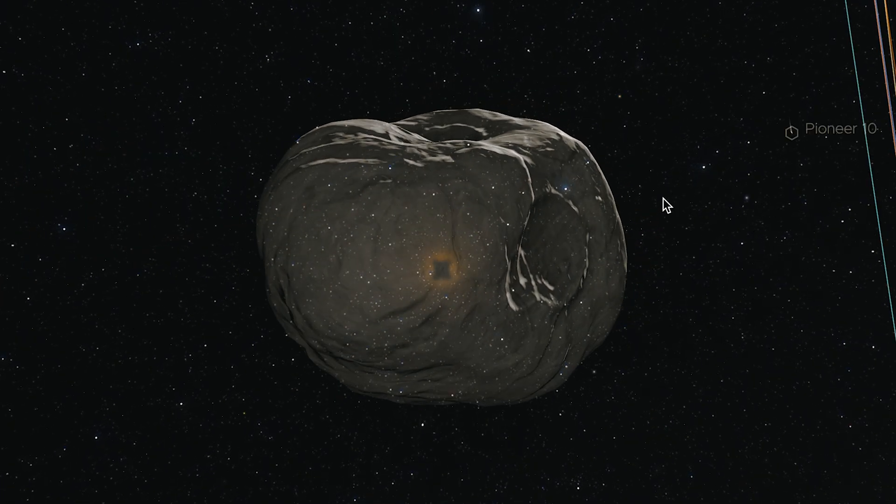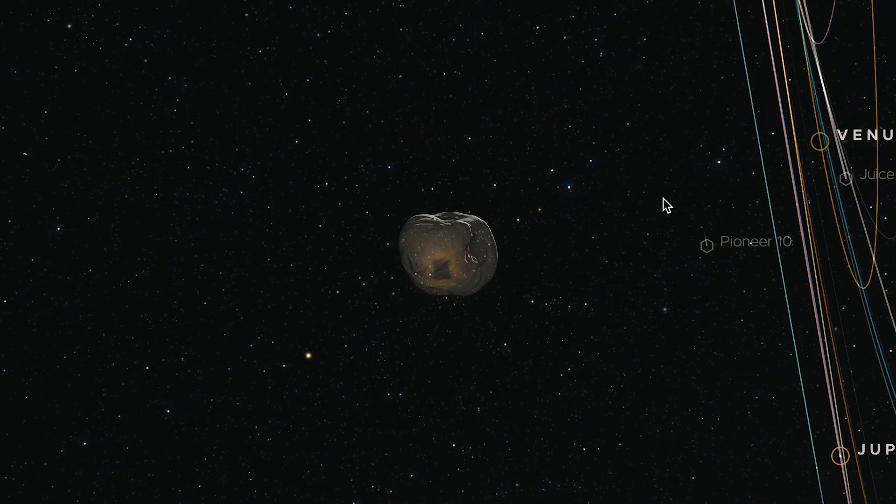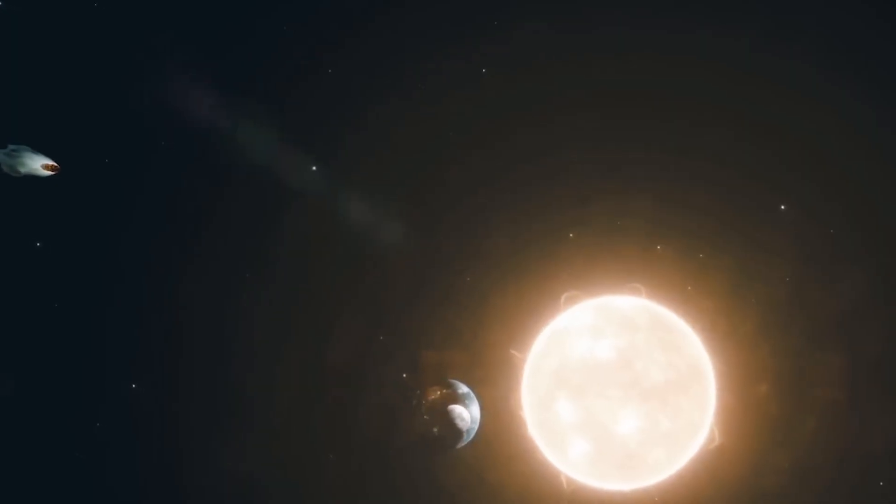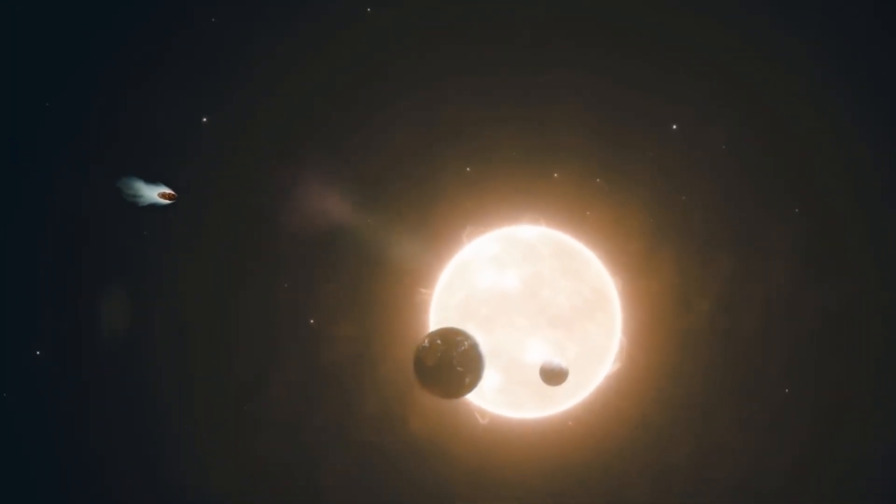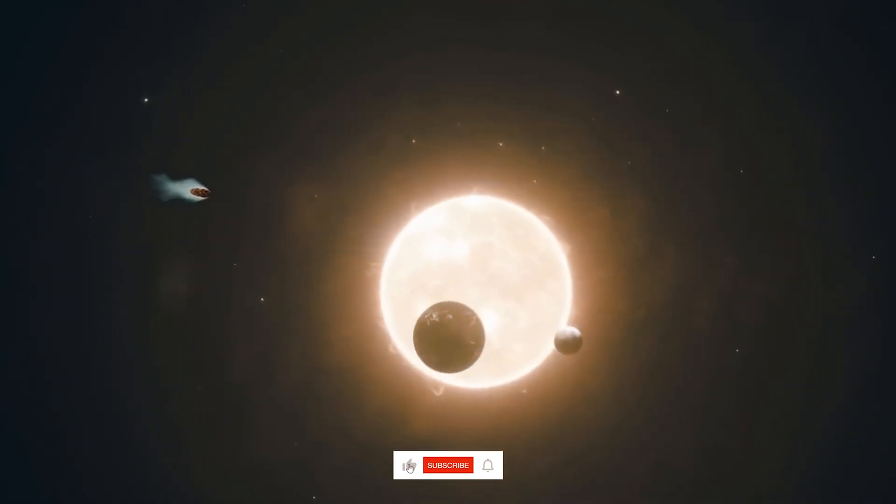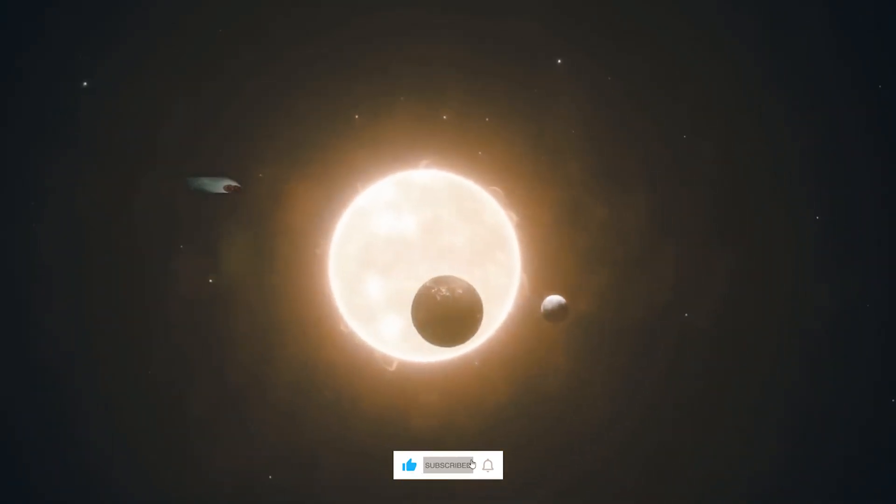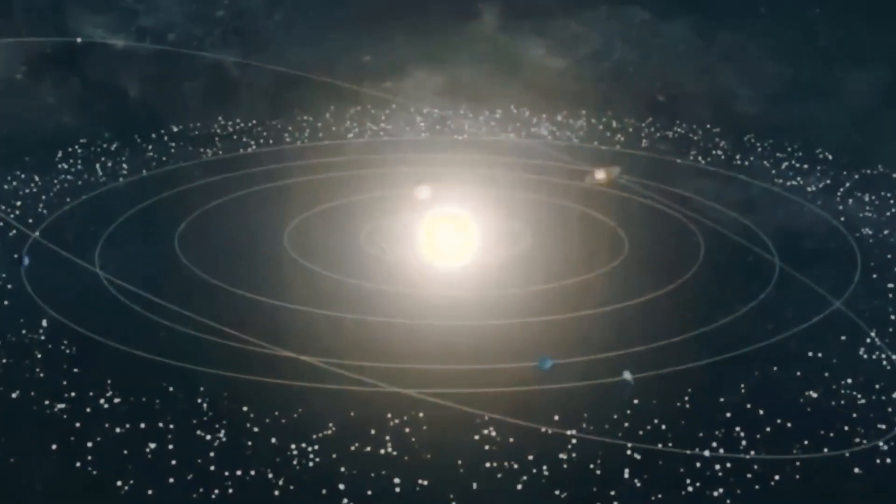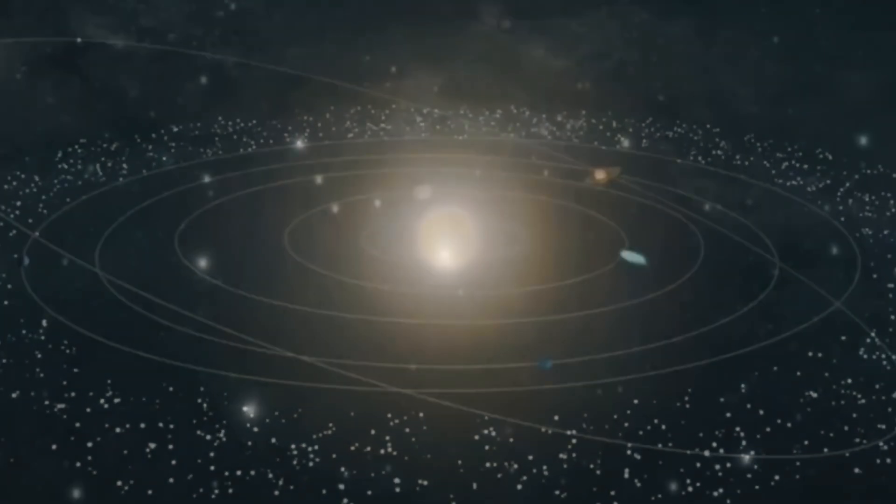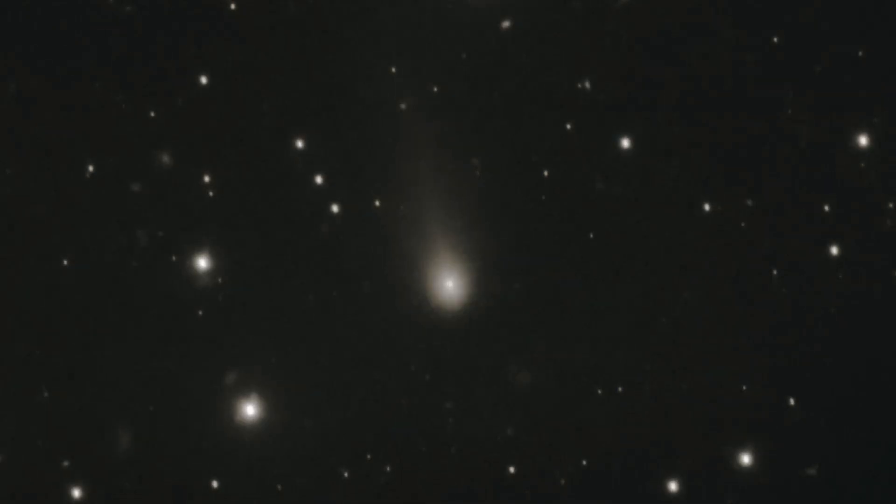Whatever the cause, 3i Atlas's chemistry offers a rare window into the makeup of distant star systems. Its carbon dioxide-dominated signature points to an origin in the frigid outer reaches of a protoplanetary disk, not around our Sun, but likely around another star. That origin fits perfectly with its interstellar path and distinguishes it from the water-rich comets that formed in the warmer neighborhoods of our solar system.